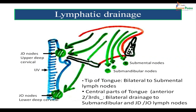Now we come to the lymphatic drainage of the tongue, which is very important because carcinoma of the tongue usually spreads by way of lymph nodes. Under the chin there are the submental lymph nodes; on the sides of the mandible below, there are the submandibular group of lymph nodes. Along the upper part of the internal jugular vein there are the jugulodigastric group of lymph nodes, also called the upper deep cervical group of lymph nodes.